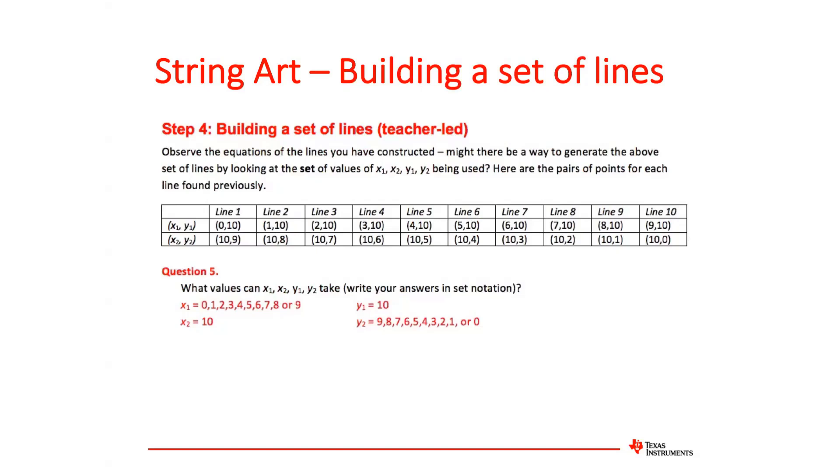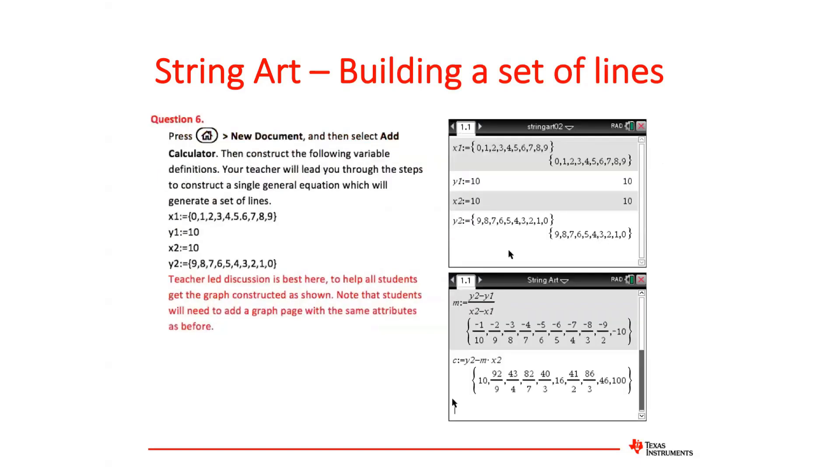And alternately, for x2, y2, the x coordinate is fixed and the y coordinate is descending from 9 down to 0. So these are sort of ways of generalizing what we're doing. And the idea is to build up to a general form of the equations or the sets of equations.